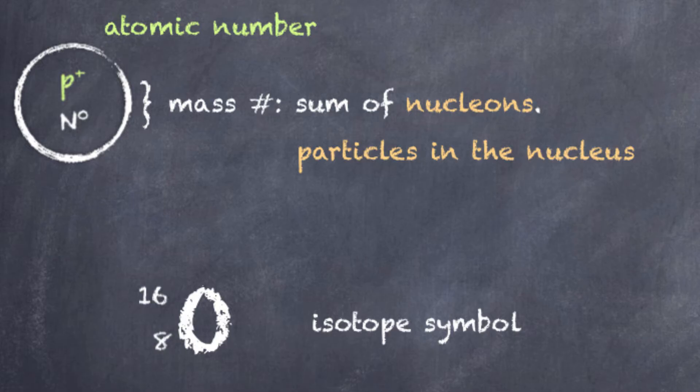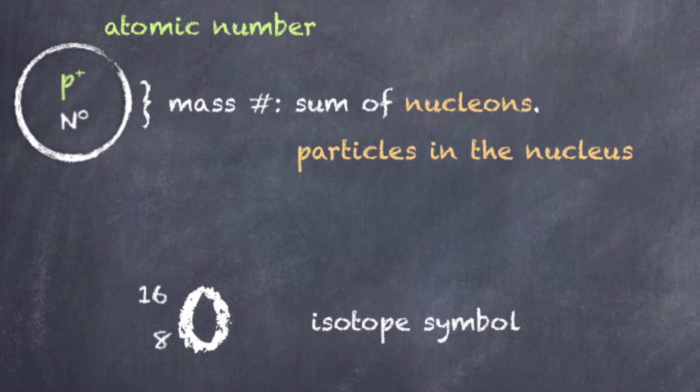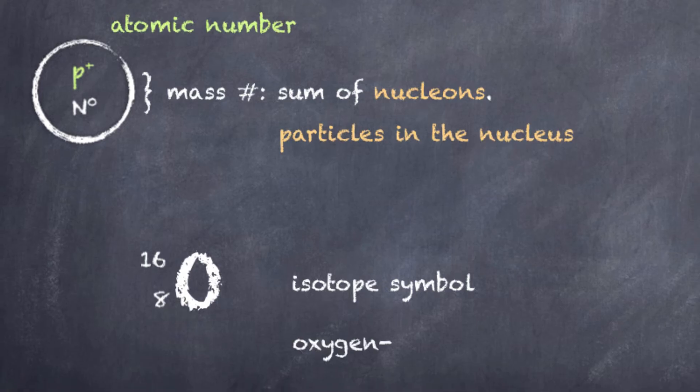We also have another way of representing a particular isotope, and that is by taking the name or symbol and putting the mass number at the end. So, for example, the most common version of oxygen is oxygen-16, and we can put that 16, that mass number, that total number of nucleons, at the end.